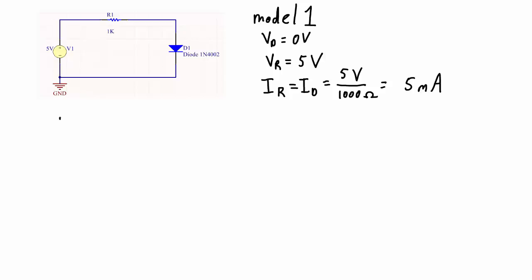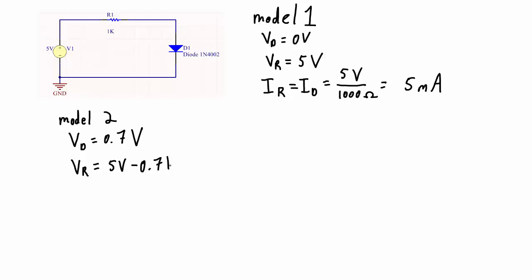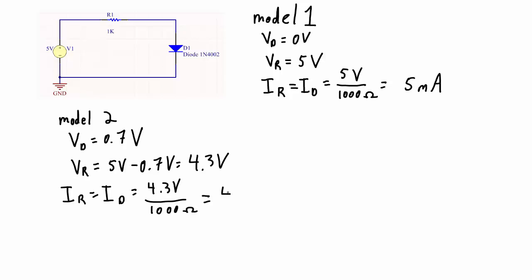Under Model 2, the diode voltage is going to be some fixed voltage defined for the type of diode. This 1N4002 is a silicon diode, and typically you use about 0.65 to 0.7 volts to model it — so we'll use 0.7 volts. That means the voltage across the resistor is 5 volts minus 0.7 volts, giving 4.3 volts. The current in the circuit is 5 volts minus 0.7 volts divided by 1,000 ohms, giving 4.3 milliamps.